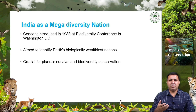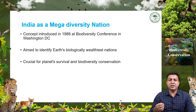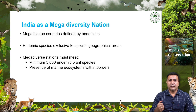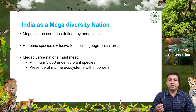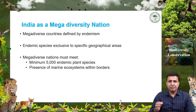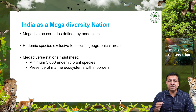The concept of mega diversity was aired for the first time in 1988 at a biodiversity conference held at the Smithsonian Institute in Washington DC. Its aim was to identify the biologically wealthiest nations on earth, crucial to the planet's survival. To qualify as a mega diverse country, the main criteria is endemism. A species is called endemic if it lives naturally and exclusively in a defined geographical area and is found nowhere else. A mega diverse country must fulfill two criteria: have at least 5,000 endemic plant species and have a marine ecosystem within its borders.